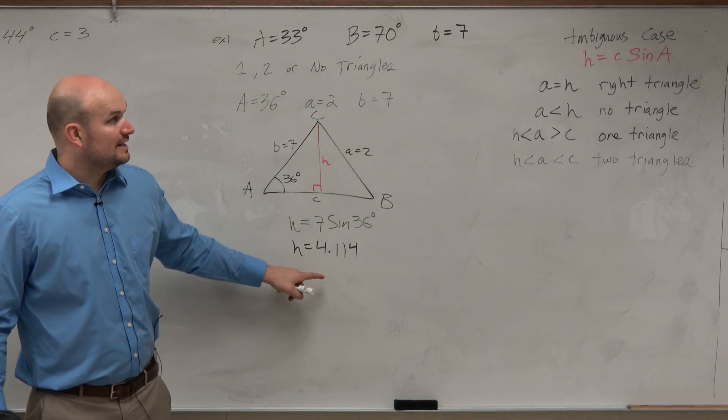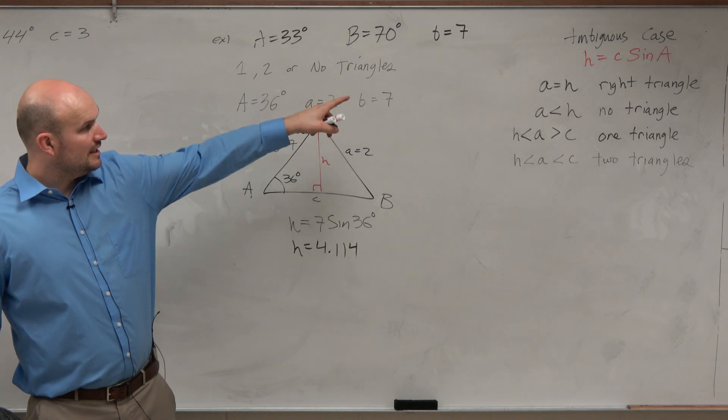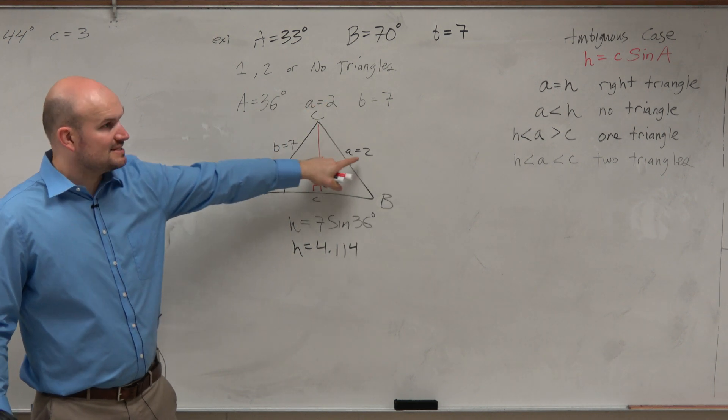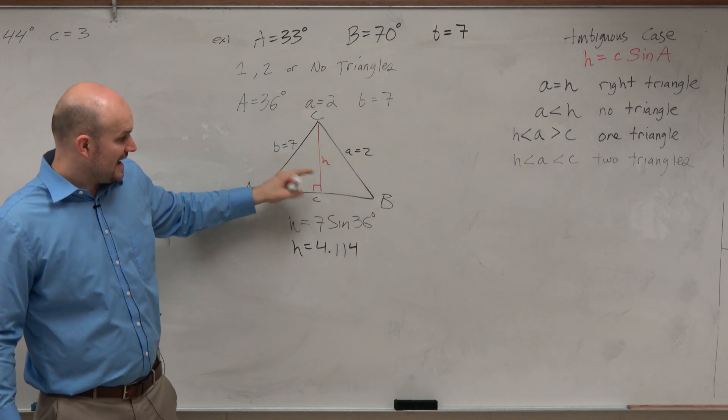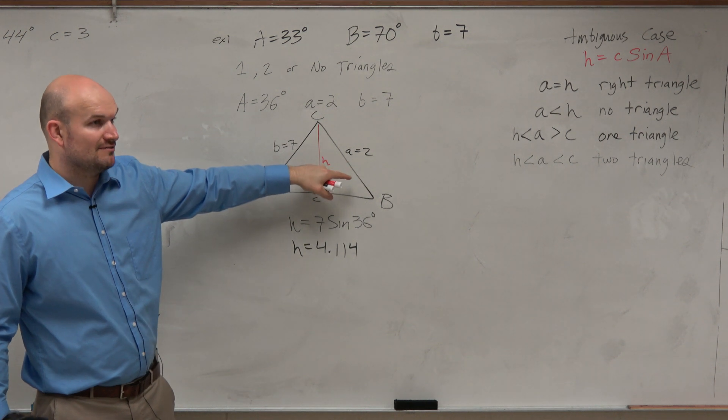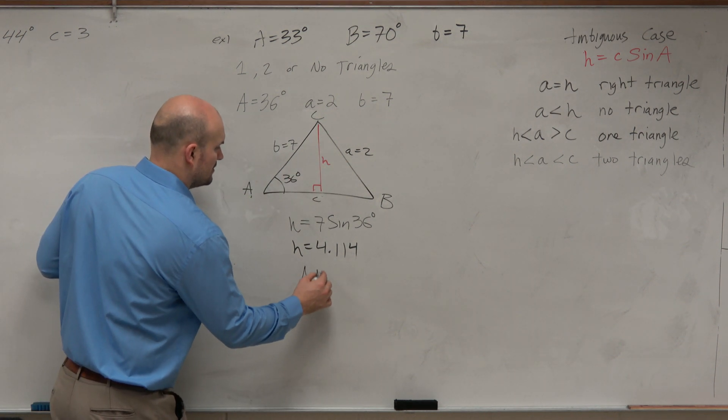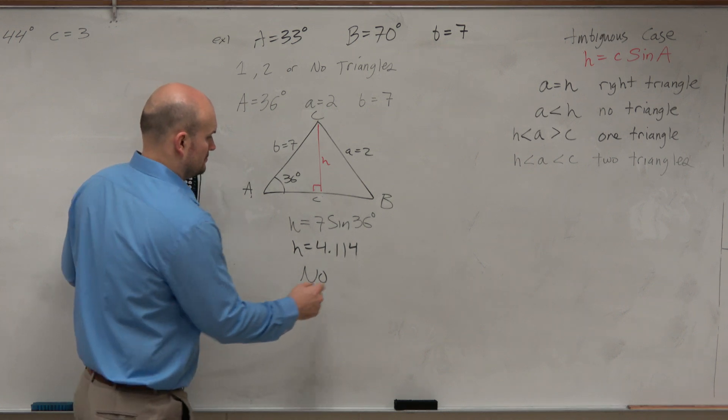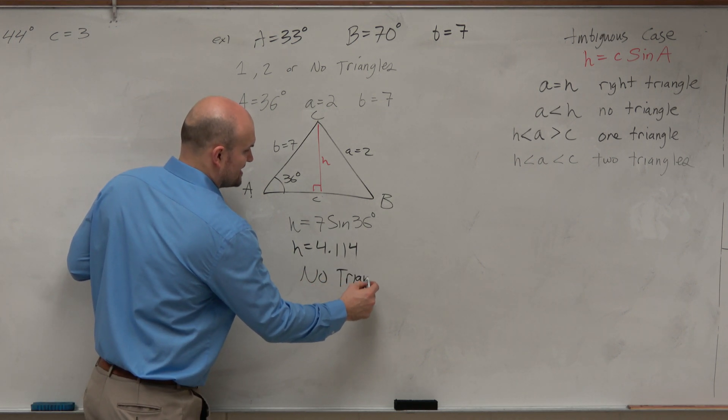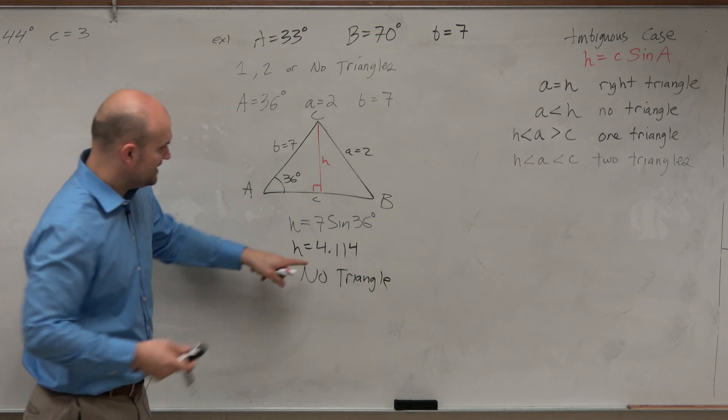Now, looking at our case, if our opposite side here is less than the height, which it is, then what do we have? No triangle. No triangle. But the triangle doesn't make any sense. Because if the height is 4, listen.